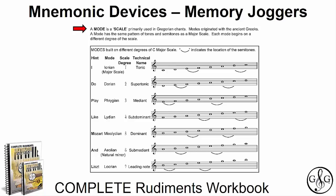Each mode begins on a different scale degree of the major scale. A simple mnemonic device is using the UMT hint sentence: 'I do play like Mozart and Liszt.' This will help you remember the order and the names of the modes.